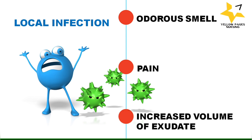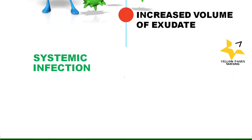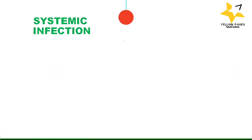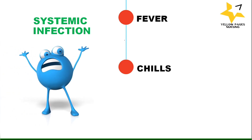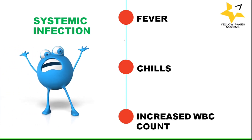Now let's discuss clinical symptoms of systemic infection: fever, chills or rigors, increased WBC count, and sometimes increased blood glucose level. In extreme conditions it may also lead to septic shock.